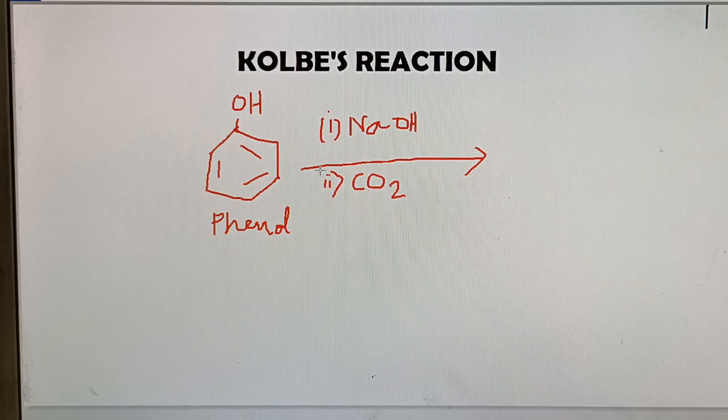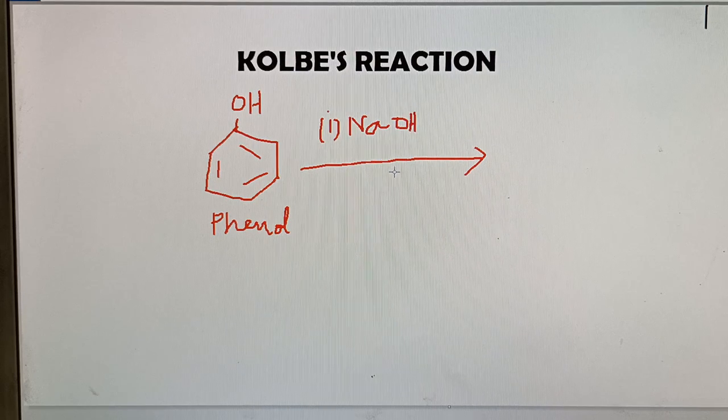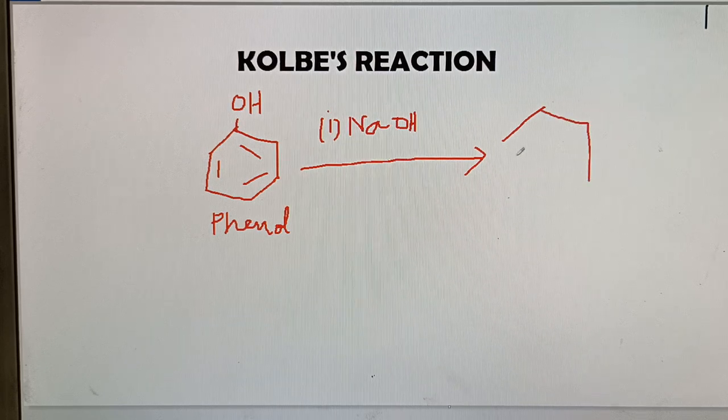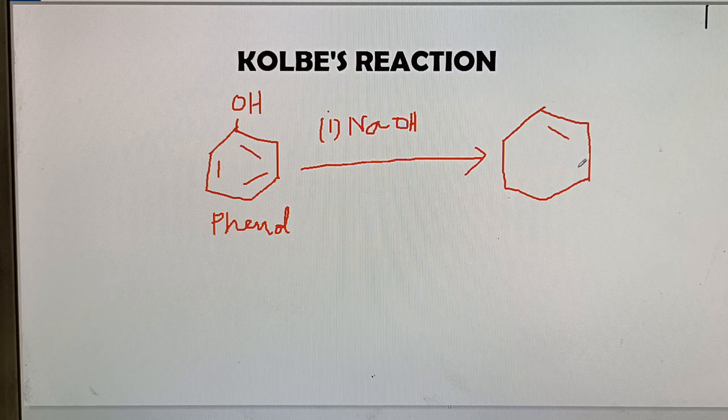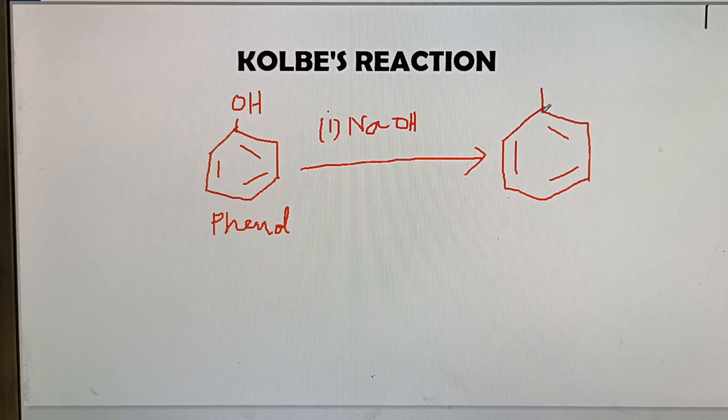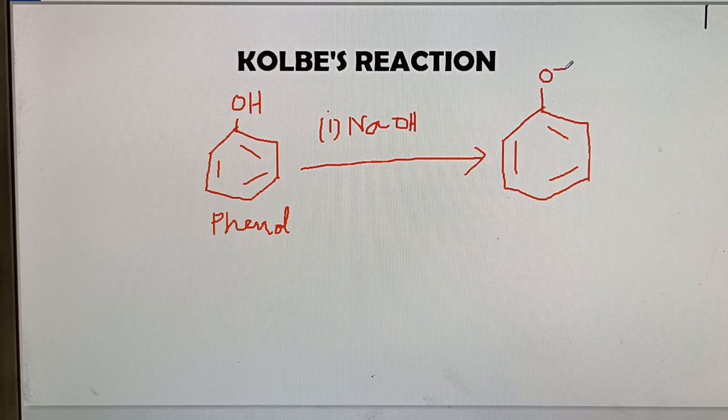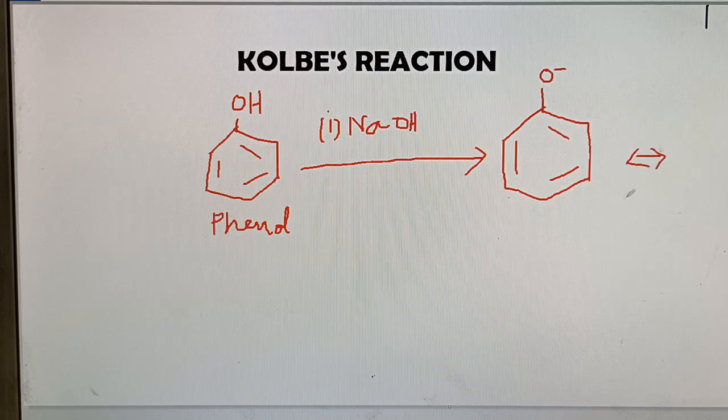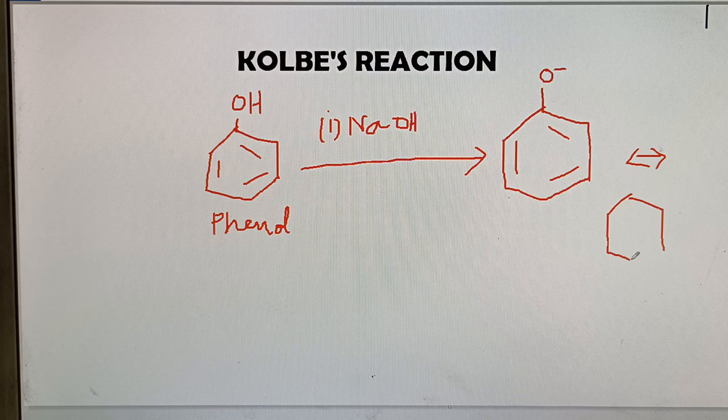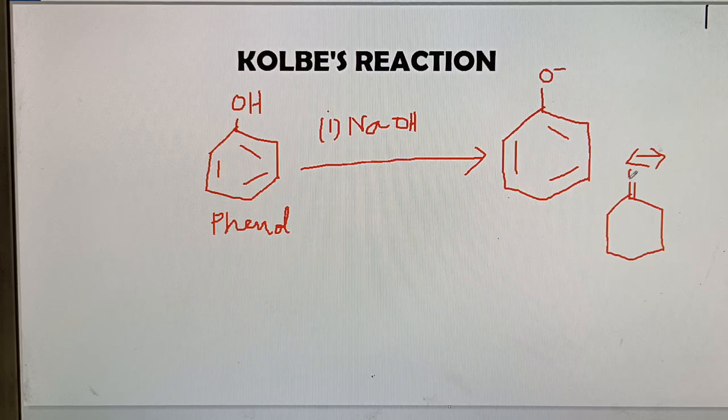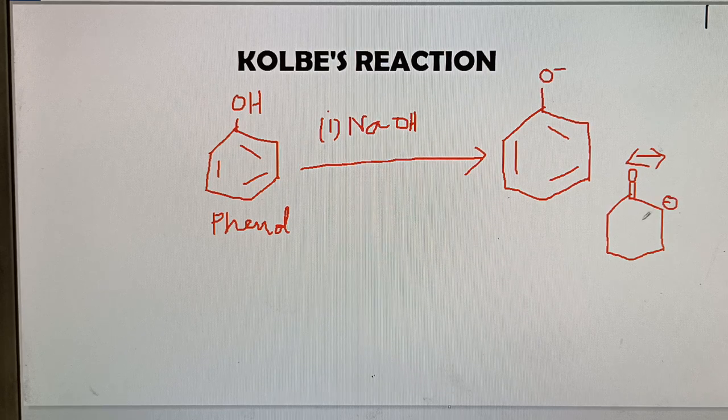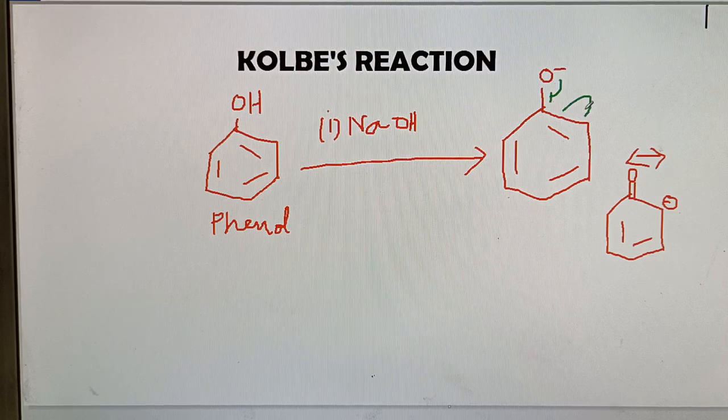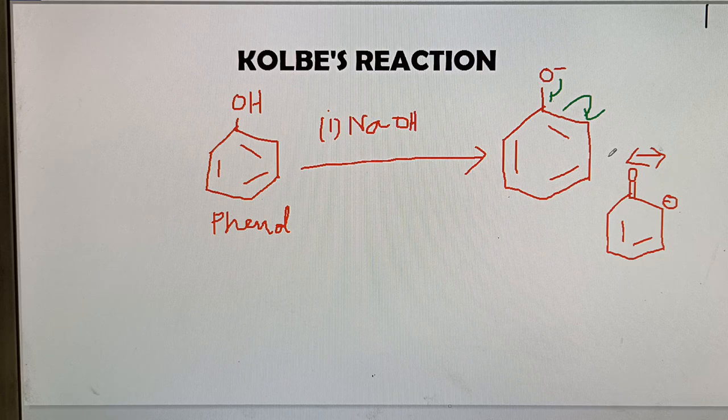At first, when phenol is treated with sodium hydroxide, then phenoxide ion is formed. We all know that. Because phenol is weakly acidic in nature and this phenoxide ion is stable through resonance. That is why this phenoxide ion is formed.